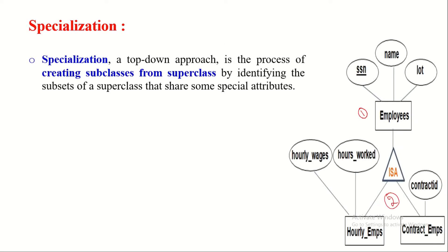Let us now discuss the specialization process. Specialization is the process of creating subclasses from a superclass by identifying subsets of the superclass that share some special attributes. Since in specialization we start the process from the parent class and create child class entity sets, this approach is known as the top-down approach.